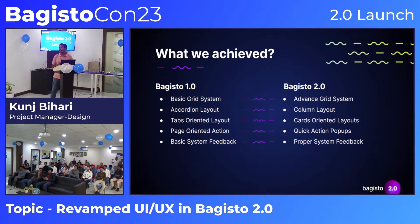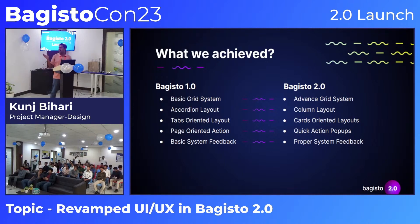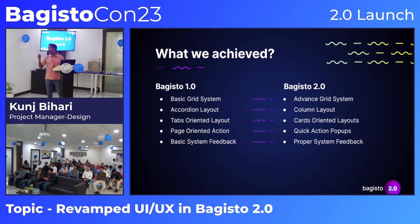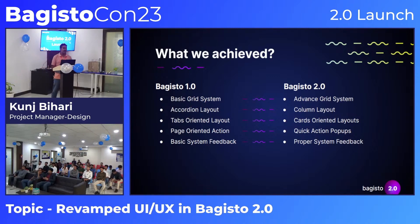So what have we achieved in going from Bagisto 1 to Bagisto 2? Previously we had a basic grid system and everything was page-oriented with many tabs. Now in Bagisto 2 we have an advanced grid system, column layout, card layout, and quick-action pop-ups. Let's discuss each one by one.